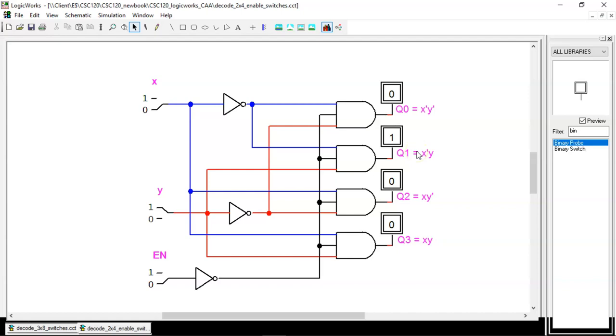This is a case of an active low enable input. A low value here allows the circuit to function normally. A high value disables the circuit. We could easily switch this to active high enable by removing the NOT gate.